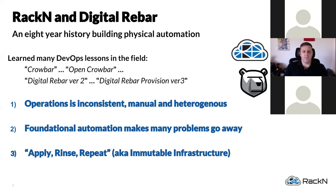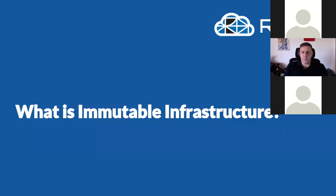They found that by applying strong automation patterns, a lot of those problems go away. A lot of provisioning systems in use today don't really operate around automation patterns in a modern cloud-native way. We'll talk about immutable infrastructure, which is one of the strong lessons learned — the apply, rinse, repeat, or create, destroy, recreate pattern.